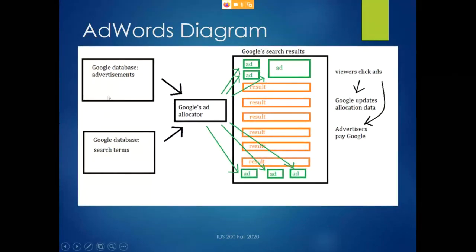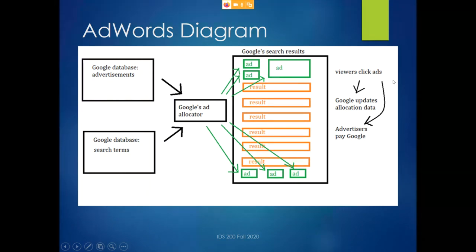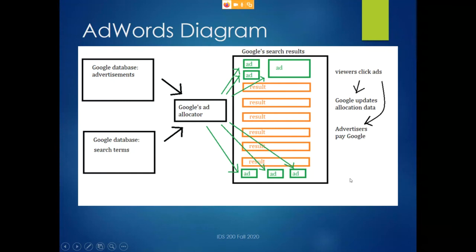Here's a quick diagram of how it all works. Google has a database of advertisements and a database of search terms. Anytime a page gets loaded with Google's search results, the ad allocator figures out the search terms, pulls a set of ads that match well with those terms, and displays them according to bids and quality scores — in the good places at the top and less good places at the bottom. Anytime a viewer clicks on an ad, Google updates its allocation data — noting that this ad has a higher click-through rate — and the advertiser sends money to Google. That's AdWords.